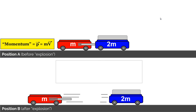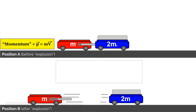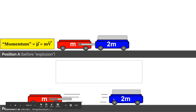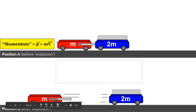In our previous explosions lab, we used two low-friction carts with an integrated spring, started both at rest touching one another, and triggered the compressed spring to launch each cart with some velocity. We changed the mass of each cart and found that when the blue cart was twice as massive as the red cart, it moved away with half the velocity. The product of each cart's mass and velocity was identical — mass of blue cart times its velocity equaled mass of red cart times its velocity.